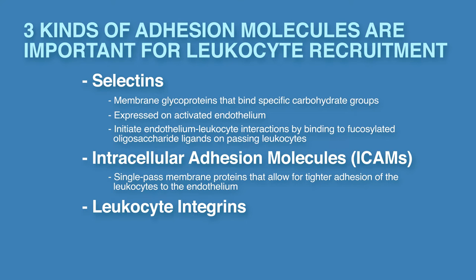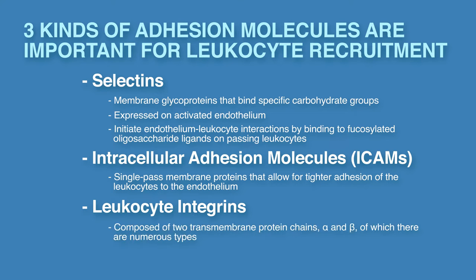Leukocyte integrins are composed of two transmembrane protein chains, alpha and beta, of which there are numerous types. Subsets of integrins have a common beta chain partnered with different alpha chains.